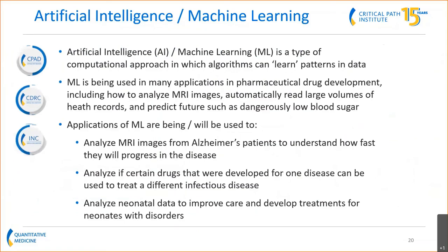We're also working a lot in artificial intelligence and machine learning. AI and machine learning — which is a type of AI — is really used to detect patterns in data, especially complex and large-volume data. In pharmaceutical drug development, it's being used most notably to analyze MRI images, read large volumes of health records, and predict future outcomes such as dangerously low blood sugar. Some of the ways we're using it include analyzing MRI images from Alzheimer's disease patients to understand how fast they'll progress, analyzing whether drugs developed for one disease could treat a different disease in the infectious disease space, and beginning to look at neonatal data to improve care and develop treatments for neonates with disorders.